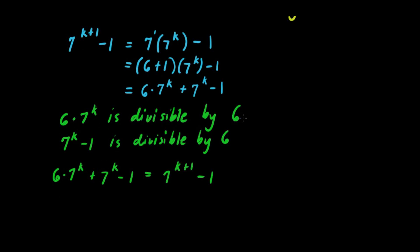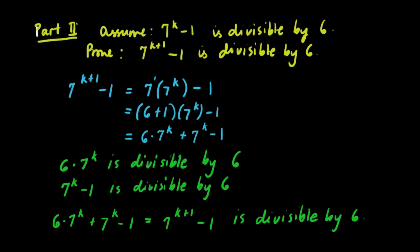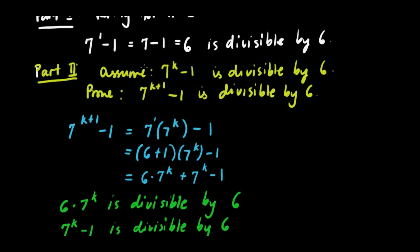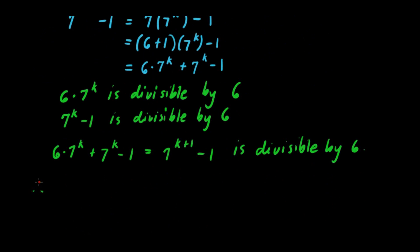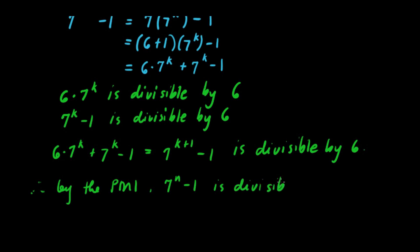So, kung ang 6 times 7 raised to k is divisible by 6, tapos yung 7 raised to k minus 1 is also divisible by 6, therefore yung sum nila — which is essentially 7 raised to k plus 1 minus 1 — is also divisible by 6. So, successful tayo sa pagpapakita na 7 raised to k plus 1 minus 1 is divisible by 6. Therefore, by the principle of mathematical induction, 7 raised to n minus 1 is divisible by 6 for every positive integer n.